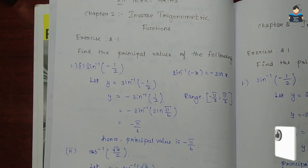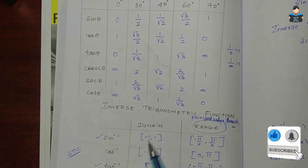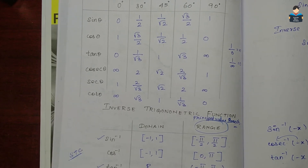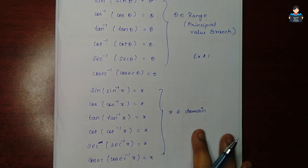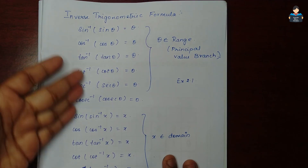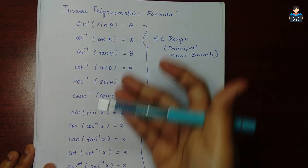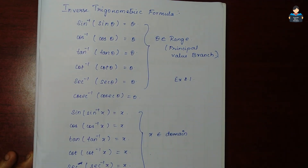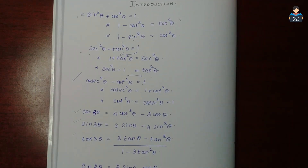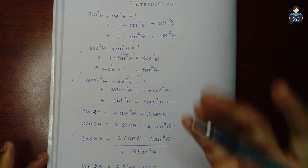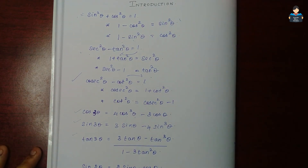For sin inverse, the domain is [-1, 1]. We check all values within this domain. All these formulas are straightforward. We will cover most of the sums — 1 or 2 extra formulas may appear, but mostly this formula set covers everything. In the next video we will solve the sums. Please subscribe. Thank you.